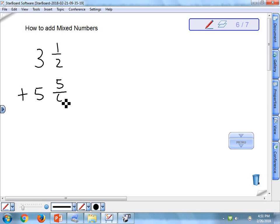The process for adding mixed numbers is pretty straightforward. I'm going to separate out the whole numbers from the fraction parts. Remember that 3 and 1 half really means 3 plus 1 half, and 5 and 5 sixths really means 5 plus 5 sixths. So we're just going to add the pieces separately.